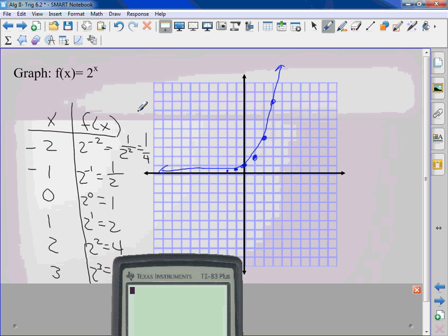What it was for this one. Because what you really have is one half to the negative third. The negative third says it belongs on the top, so it's 2 to the third, which is 8. When I graph this one, 1, 2, 3, 8, 2, 4, 1, 2, 1.